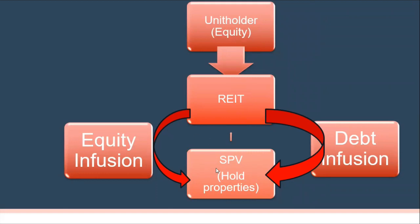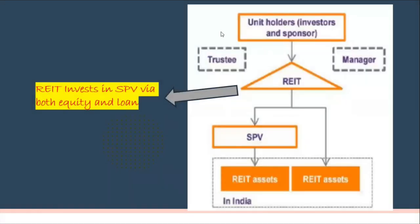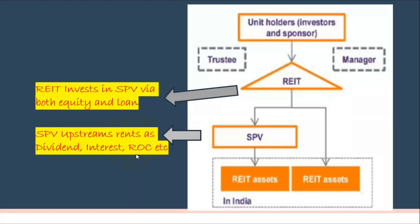The reasons for that structure is another topic, but this is how it works. The unit holder infuses money in the form of equity into the REIT, and this is further infused as either equity funds or debt funds into the SPV — the special purpose vehicle — which holds properties. The REIT invests in SPVs via both equity and loan, and the SPV then needs to pay back to the REIT. The SPV upstreams rents as dividends and pays back the loan as return on capital and interest to the REIT.